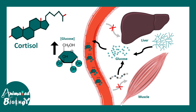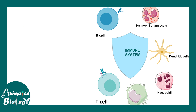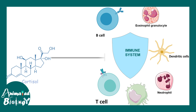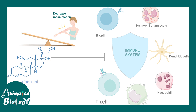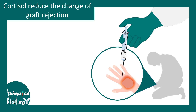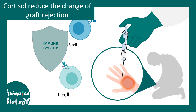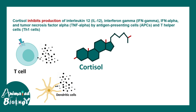Cortisol can also make glucose from other molecules such as amino acids through the process of gluconeogenesis. Overall, it has an anti-insulin activity — it blocks insulin's overall effect. When it comes to the immune system, glucocorticoids like cortisol have a potent immunosuppressant effect. Cortisol decreases inflammation but also increases the risk of some infection. Cortisol injection is used by doctors when a skin graft is given, to suppress the immune system's hyperactivity and prevent graft rejection.